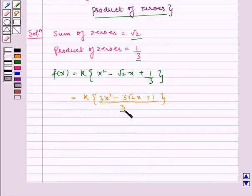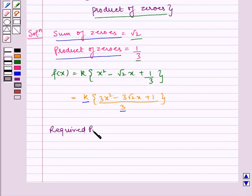Now, this 3 gets cancelled with k if we assume k to be 3 to satisfy our sum of zeros and product of zeros. Therefore, required polynomial is f of x is equal to 3x square minus 3 root 2x plus 1.